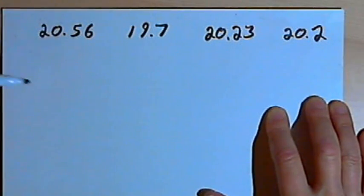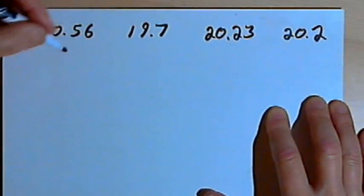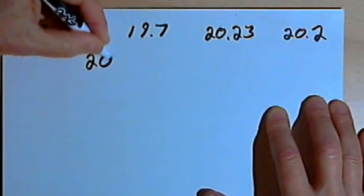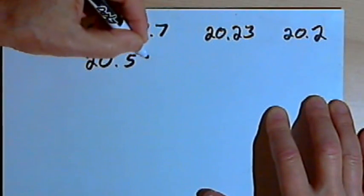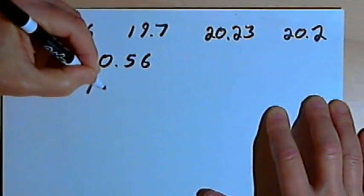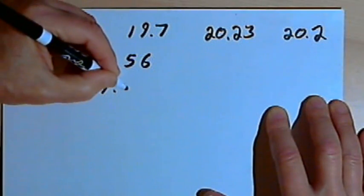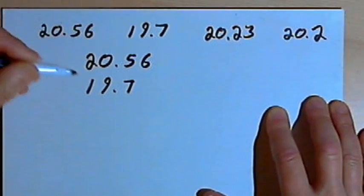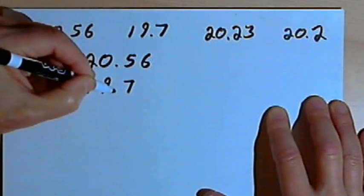The first step to make it easy to compare these numbers is to write them in a vertical column. I want to make sure I line up my decimal points when I do this. So I've got 20.56. Directly under that I'm writing 19.7. The decimal points are lined up one under the other.